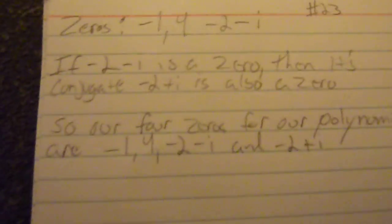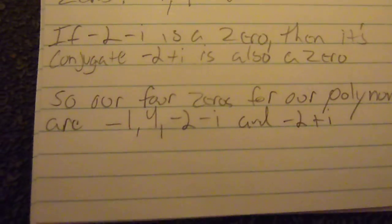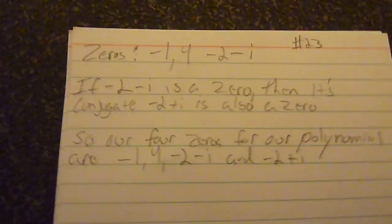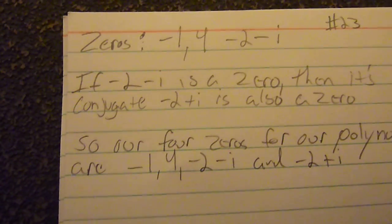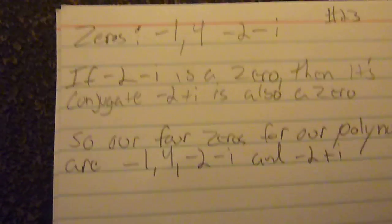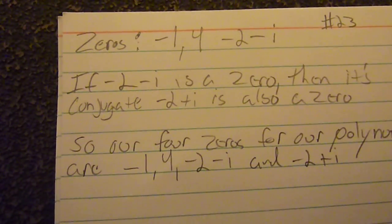Okay, this is pre-calc number 23, practice exam 2, asked to form a polynomial with the zeros of negative 1, 4, and negative 2 minus i.